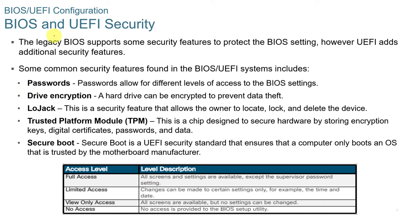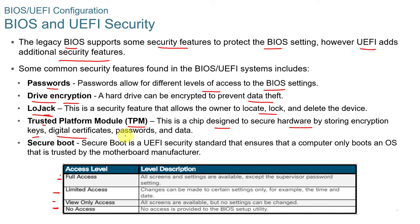Legacy BIOS supports some security features, but UEFI adds more. Common features include passwords that allow different levels of access: full access to change everything, limited access for things like time and date, or view-only/no access. Drive encryption can prevent data theft. LoJack allows the owner to locate, lock, and delete the device even without an OS — it resides on the motherboard. The Trusted Platform Module, or TPM, is a chip that stores encrypted keys, digital certificates, passwords, and data. Secure boot is a UEFI standard ensuring the computer only boots to an OS trusted by the motherboard manufacturer.